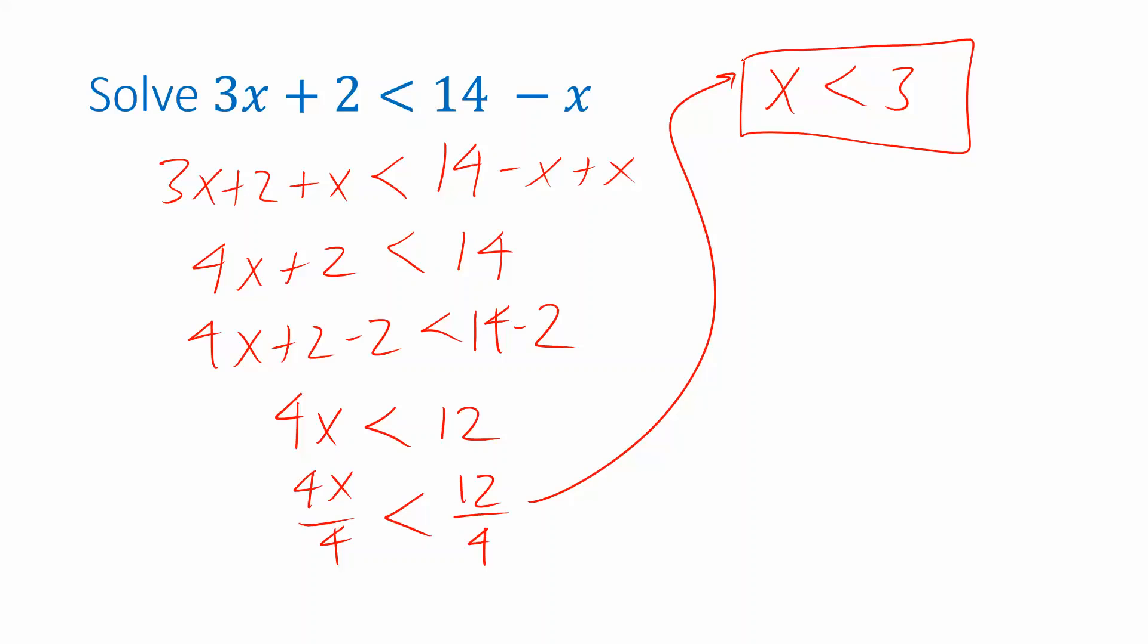What this is telling me is I can plug in any number that's less than 3 and it will satisfy the original inequality. If I plug a 1 in here I'll get 3 times 1 plus 2. That's 5. 14 minus 1 is 13. 5 is less than 13. So that works when I plug in a 1. But it would also work if I plugged in a 2. Because then I'd have 8 is less than 12. Which is true. It would also work if I plug in a 1.7 or negative 18. Anything that's less than 3 works.